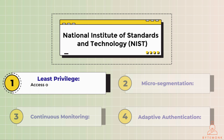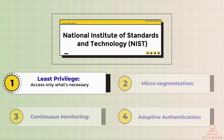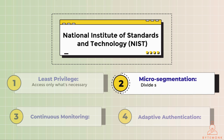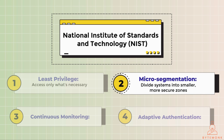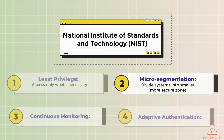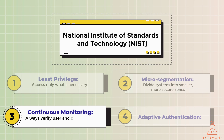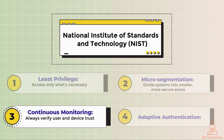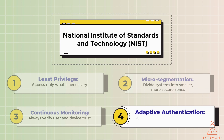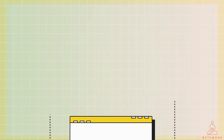Least privilege access means users are only granted access to what they need to do their jobs, helping to prevent attackers from reaching sensitive data even if they compromise a user account. Micro-segmentation divides the network into smaller segments, each with its own security controls, limiting the damage an attacker can do. Continuous verification means all access requests are continuously verified regardless of their origin, including checking the user's identity, device security posture, and context of the request. Adaptive authentication means adjusting security based on context such as location or user behavior.